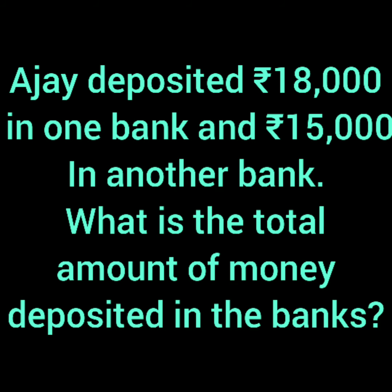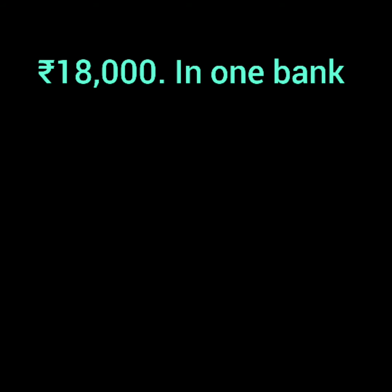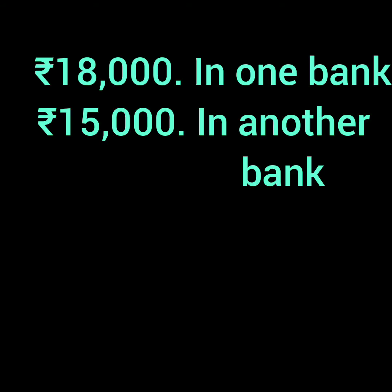There were two banks where Ajay deposited money. We have to find out the total amount he deposited, so we have to add. Write 18,000 for one bank and below it write 15,000 for another bank. When you are adding, draw the lines for ones, tens, hundreds, thousands, and ten-thousands — it will be easy for you to add.